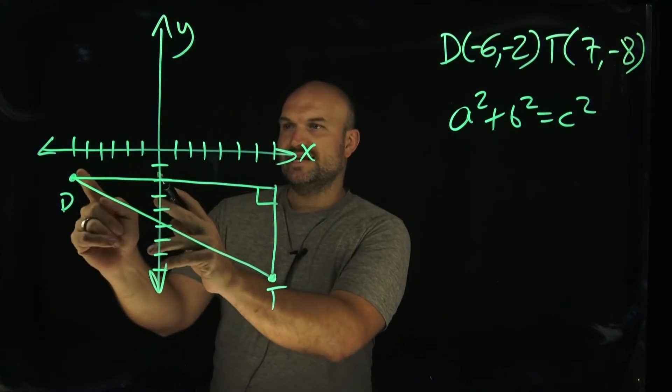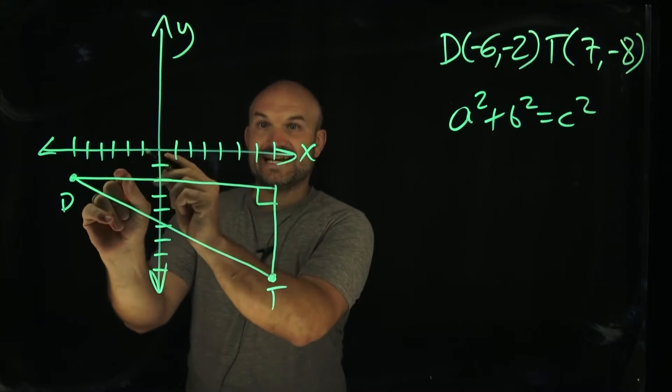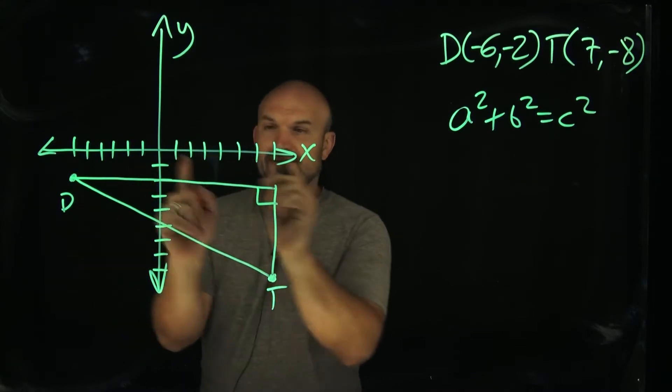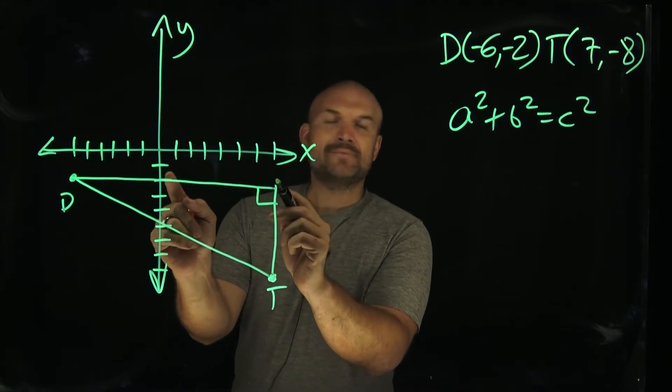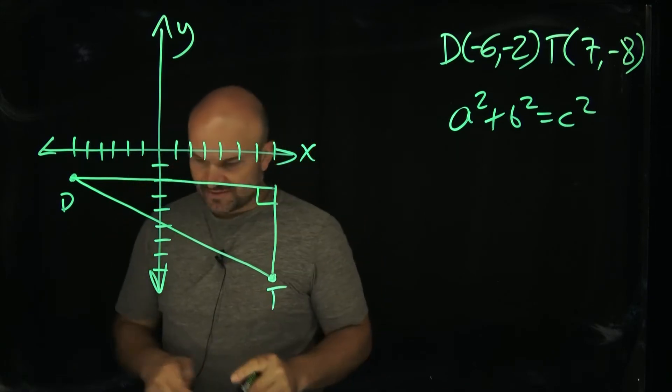from here to here is negative six. So that has a total distance of six, an absolute distance of six. And this one is from zero to seven. So that has an absolute distance of seven. Six plus seven is going to be a 13. So I'm just going to put that.